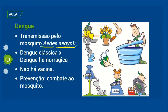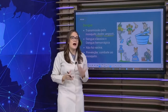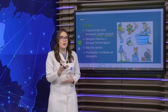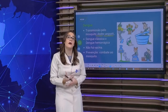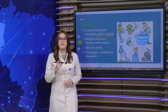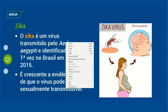A dengue pode vir de duas maneiras: da maneira clássica, com sintomas de cansaço e febre, ou da maneira hemorrágica. A hemorrágica tem os sintomas da dengue clássica acrescidos de sangramentos. Normalmente quando as pessoas vão a óbito é quando têm a dengue hemorrágica. A dengue não tem vacina, então o melhor método é se prevenir do mosquito: fechar bem o lixo, não deixar acumular água em pneus, nos pratinhos dos vasos, pois o mosquito se reproduz nessa água.